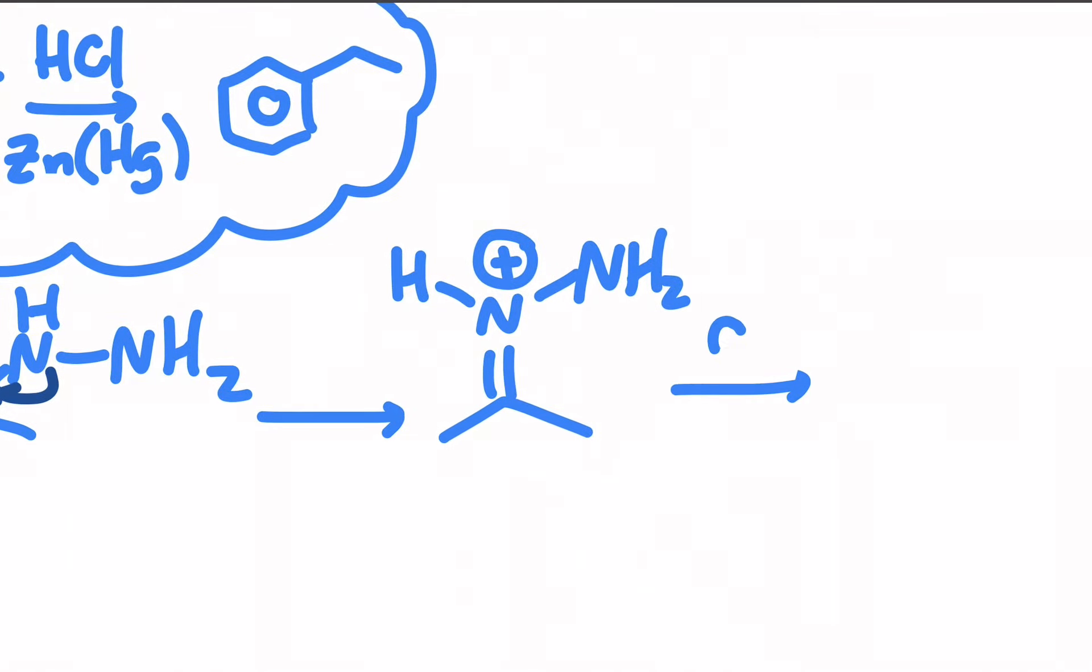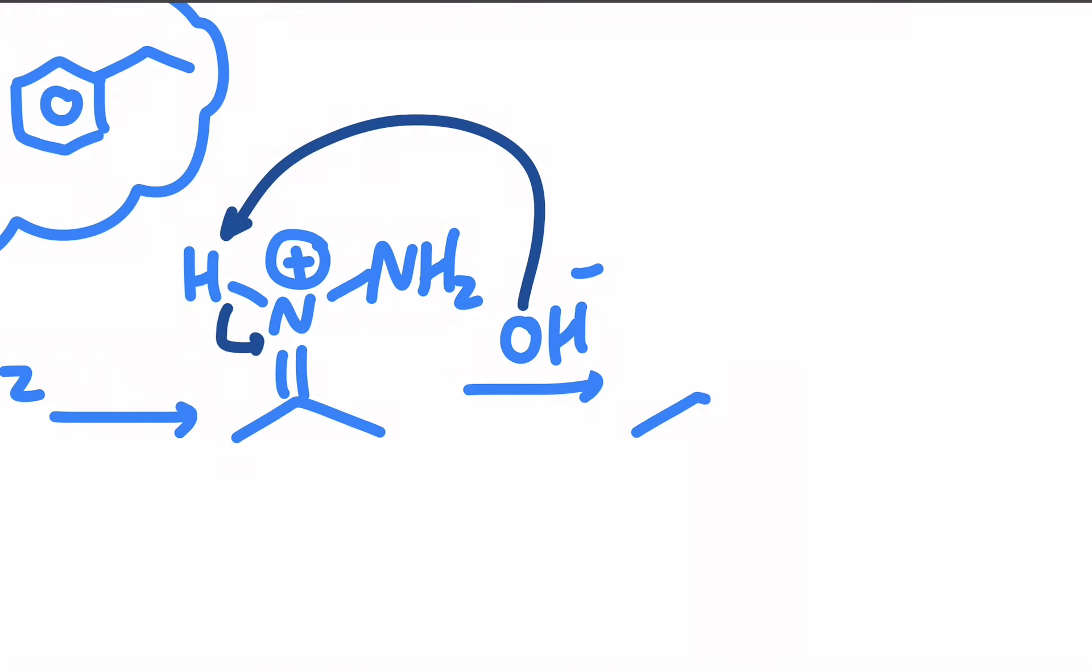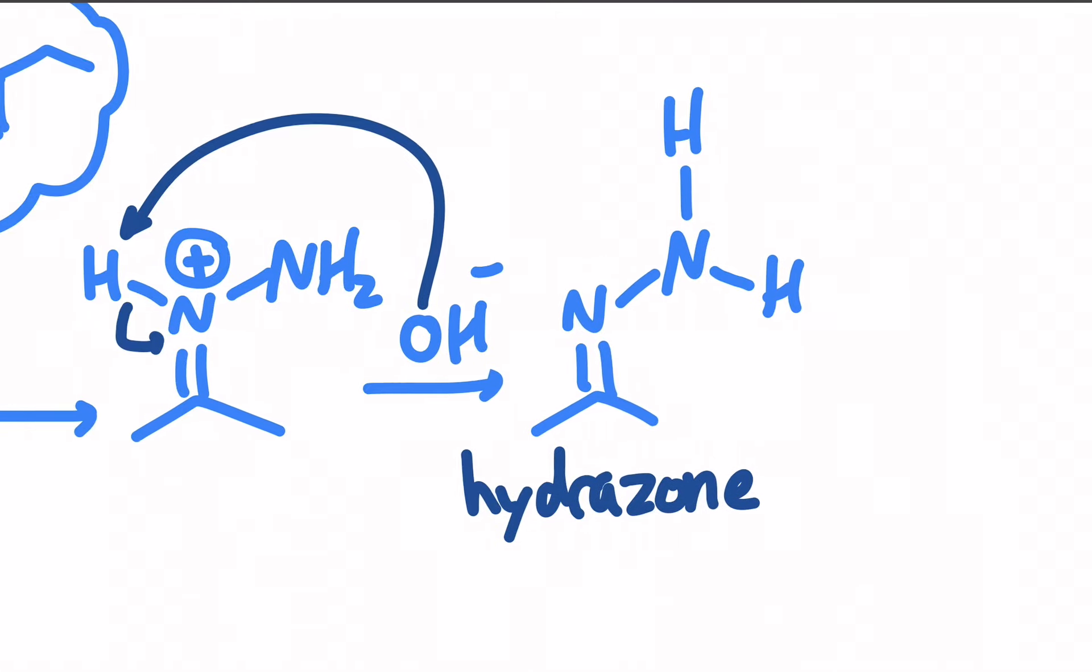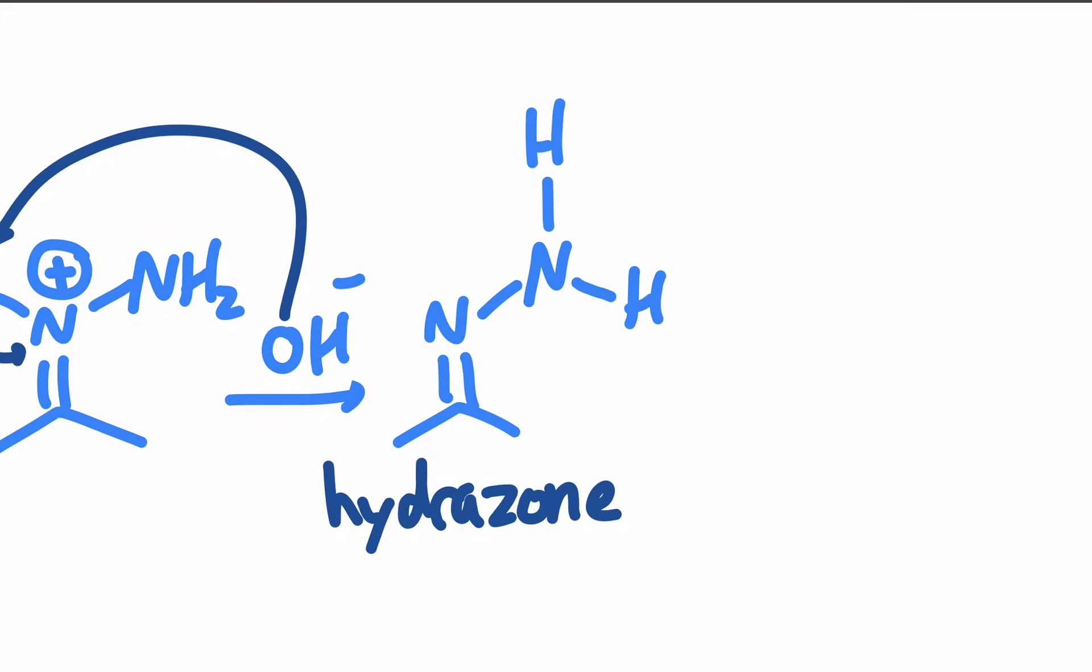And since we are in base, hydroxide can actually act as a leaving group, so we're going to have it leave. That should look very strange, but under basic conditions you can have a hydroxide get kicked out. And under such basic conditions we'll actually hardly have any of this what looks like positively charged intermediate for any length of time, but we're going to take that extra H away and get a neutral what's called hydrazone. This is the key intermediate that's formed in the Wolff-Kishner - this is called a hydrazone.